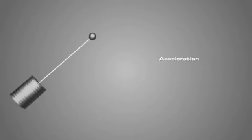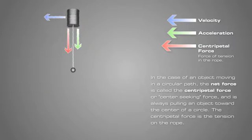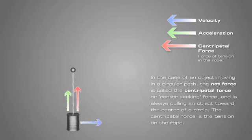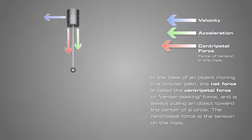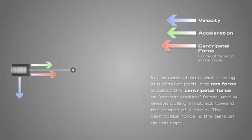Acceleration of the can is caused by a net force acting on the object. In the case of an object moving in a circular path, the net force is called centripetal force or center-seeking force and is always pulling an object toward the center of a circle.